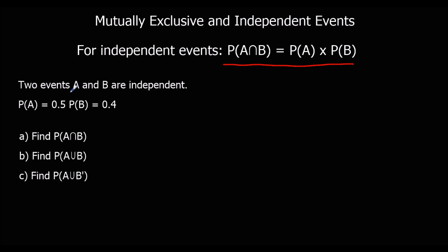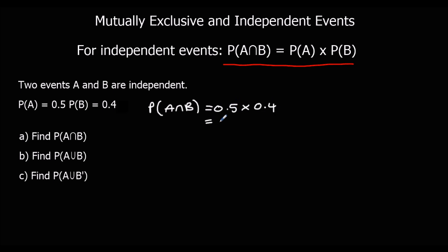In the question here we're told two events are independent and the probability of A is 0.5 and the probability of B is 0.4. So that means the probability of A and B is 0.5 times 0.4, and that's 0.2.